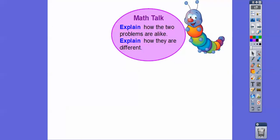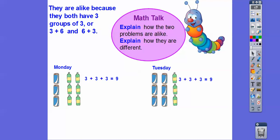So here, explain how the two problems are alike and explain how they're different. So here they are. They're alike because they both have three groups of 3. Or Monday was 3 + 6 and Tuesday was 6 + 3. But we got the same sum, which was 9.